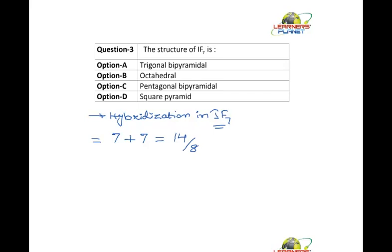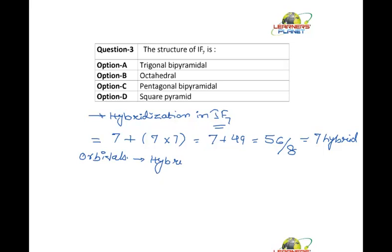I have made a mistake here. There are seven fluorine atoms and the number of valence electrons in fluorine is seven. So it comes out to be 7 plus 49, which equals 56. Now divide it by 8. So there are seven hybrid orbitals. What is the hybridization here? It is SP3D3. So hybridization is SP3D3.